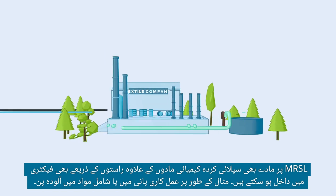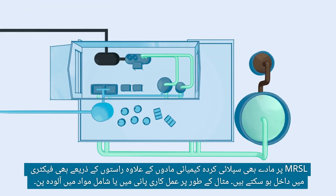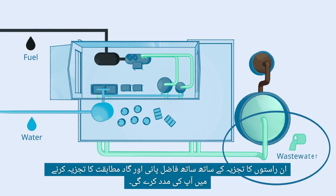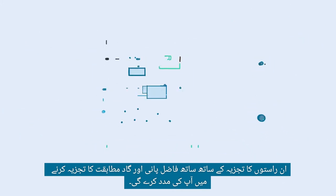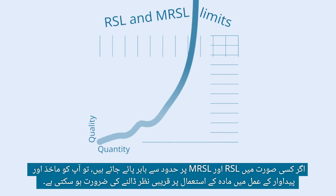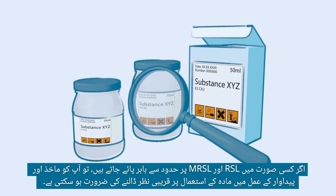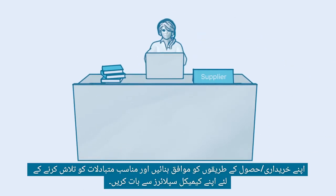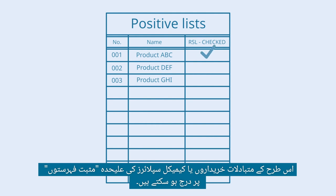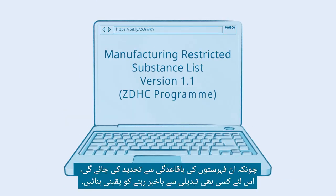Substances on the MRSL may also enter the factory through pathways other than supplied chemicals — for example, as contaminants in process water or input materials. An analysis of these pathways, as well as of wastewater and sludge, will help you verify conformance. In case substances are found beyond the limits on the RSL and MRSL, take a closer look at the source and use of the substance in the production processes. Adjust your procurement practices and talk to your chemical suppliers to find suitable substitutes. Such substitutes may be listed on separate positive lists of buyers or chemical suppliers. Since these lists are updated regularly, make sure to stay up-to-date about any changes.